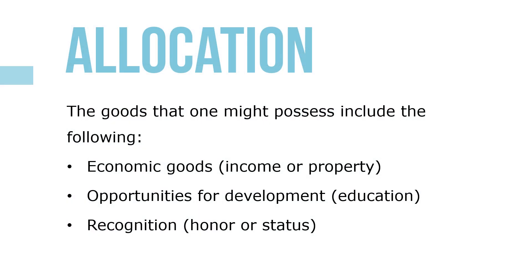The concept of appropriate and just allocation of society's goods and interests is one of the central themes in all discussions of justice. The goods that one might possess include the following: economic goods like income or property, opportunities for development like education or citizenship, and recognition, honor, or status.